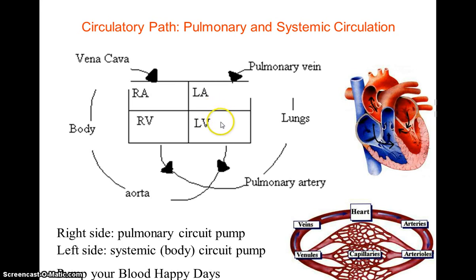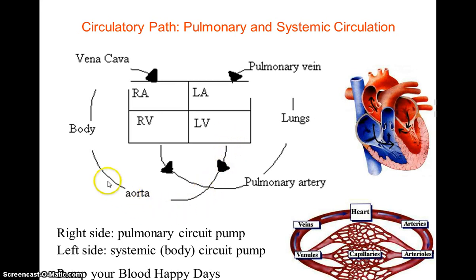Blood will enter into the strongest pumping chamber of the heart, the left ventricle, and then blood will be ejected through the aortic valve into the largest artery of the body, which is the aorta. The aorta carries blood to the arms, head, and also to the lower portions of the body, where nutrient exchange can take place.